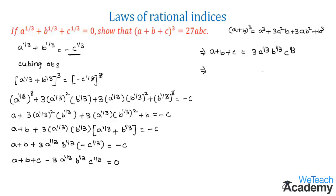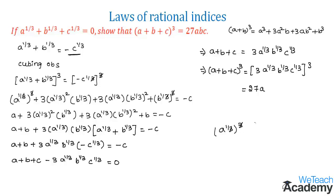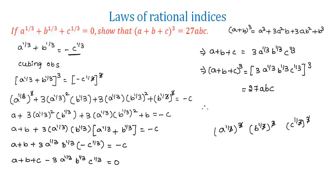Now let us cube again on both sides. We get a plus b plus c whole cube is equal to 3 into a power 1 by 3 into b power 1 by 3 into c power 1 by 3 whole cube. Simplifying the right hand side: 3 cube is 27, and a power 1 by 3 whole cube is a, b power 1 by 3 whole cube is b, and c power 1 by 3 whole cube is c. So we conclude that a plus b plus c whole cube is equal to 27abc, which is the required RHS.